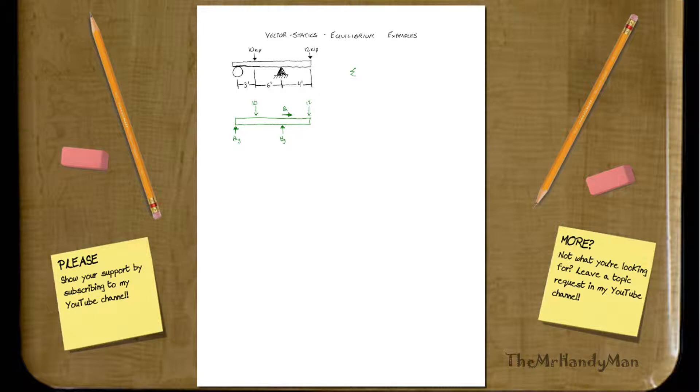So, okay, let's start off with our rules. We have the sum of F of X is equal to 0, which is equal to just BX. So we know BX is equal to 0. That's simple enough.